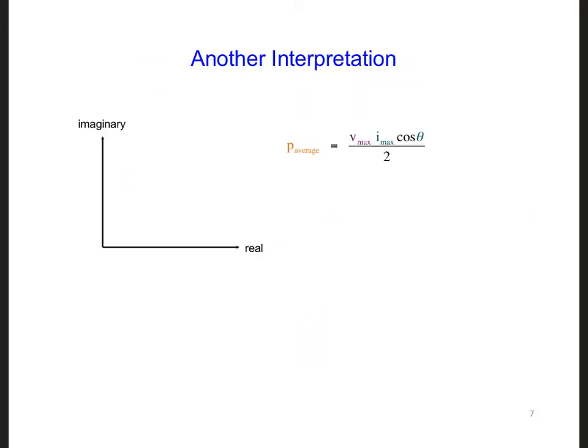To interpret this result, let's plot the RMS voltage and the RMS current in the complex plane together.